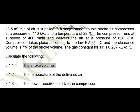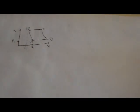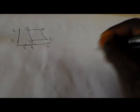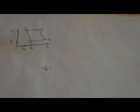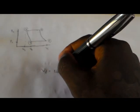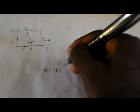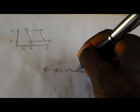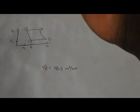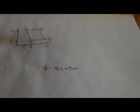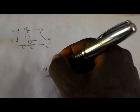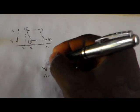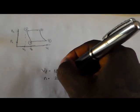Let's write our data down. We have the volume delivered — VT is equal to 18.5 cubic meters per minute. This is a double-acting air compressor, so the number of strokes per revolution equals 2.